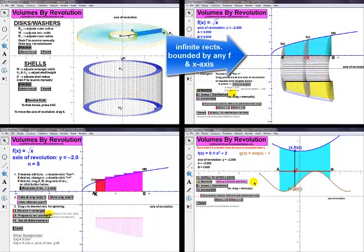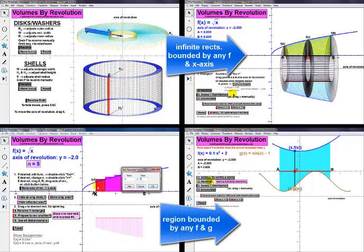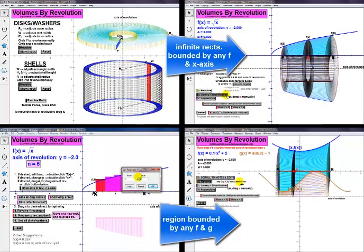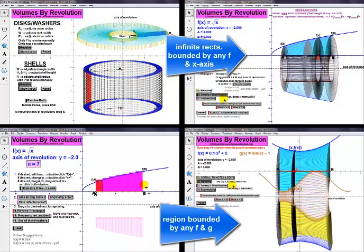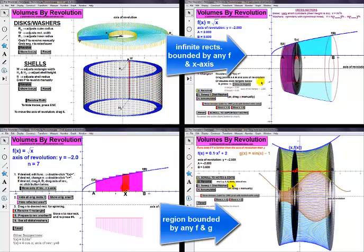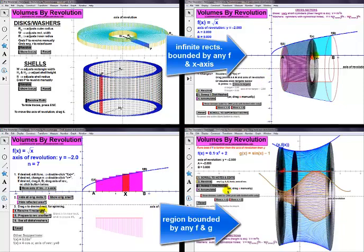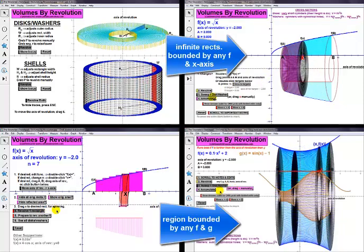On subsequent page tabs, you can revolve a region of your choosing about any vertical or horizontal axis. The region can be bounded by any function f and one axis, or any two functions f and g, as well as any lines at A and B.